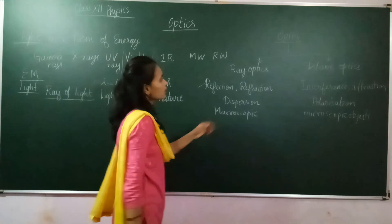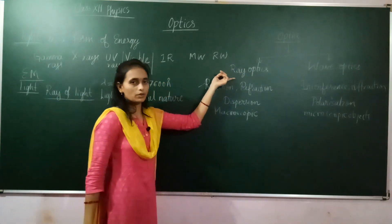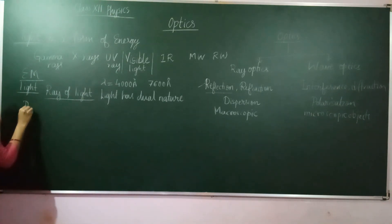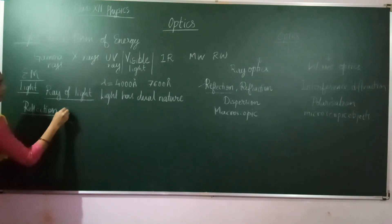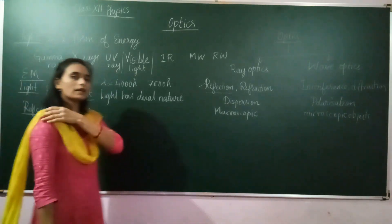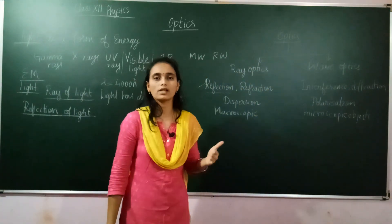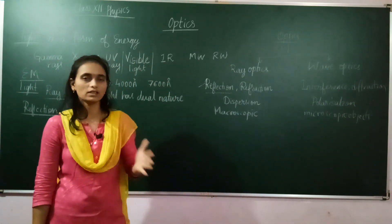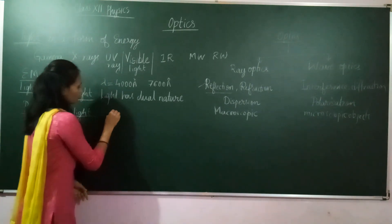In this chapter, we will first study ray optics, and the wave optics part will be covered in the next chapter. In ray optics, we will begin with the phenomenon of reflection. Reflection of light is a phenomenon in which whenever light from a source strikes a surface, the rays reflect back into the same medium.